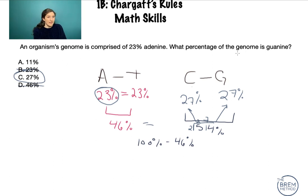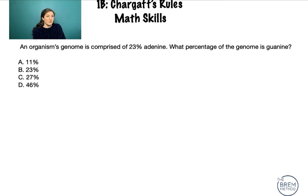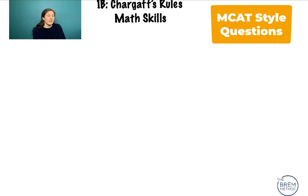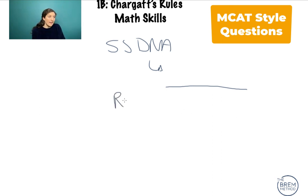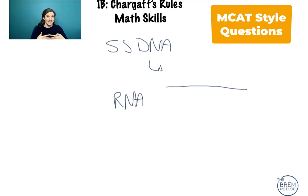One last thing to prepare you for any eventuality on the MCAT: these questions could also ask about the composition of single-stranded DNA. It's a bit of a trick question, because there's no way to know the composition of single-stranded DNA unless you're given the entire strand. The whole reason we can do this math is because of base pairing in double-stranded DNA. Single-stranded DNA, mRNA, or RNA of any kind could have any composition, because it's just one strand.